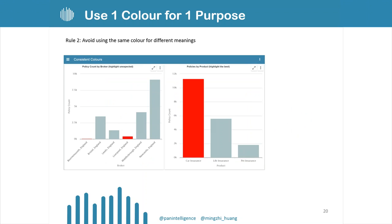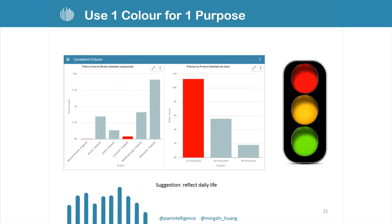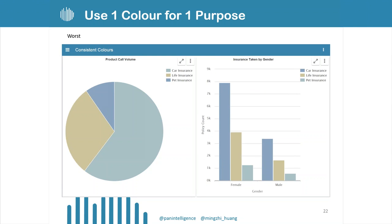Rule number two is avoid using the same color for different meanings. For example, the chart on the left is using red to represent something bad, while the one on the right is using red to represent something good. If we try to reflect it to our daily life, we probably want to use green to represent something good, so that we've got some consistency. The worst example is the one we saw at the very beginning. It uses blue to represent pet insurance on the left and car insurance on the right.